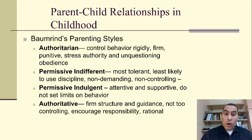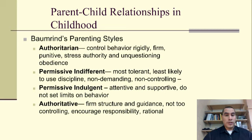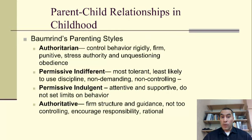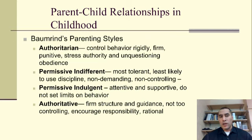Another key factor in the parent-child relationship is the style of parenting. Diana Baumrind came up with four different styles. Starting with the authoritarian — think dictator-like. These are parents who control behavior very rigidly and firmly, quick to use punishment, stressing authority and unquestioning obedience. When you ask them why you have to do something, they're likely to say 'because I said so' — it's my way or the highway.